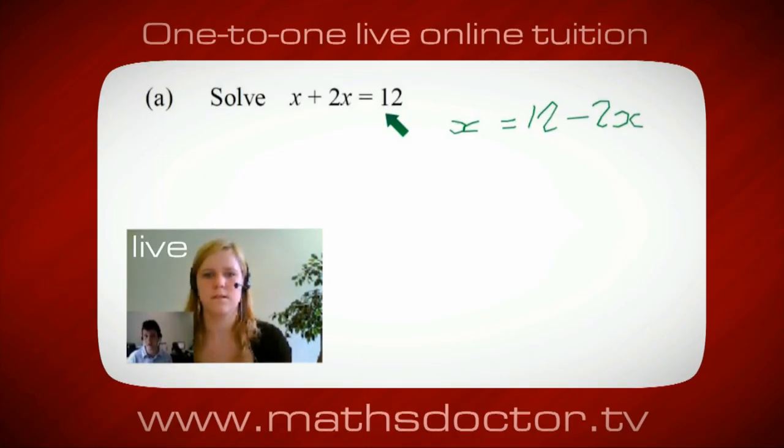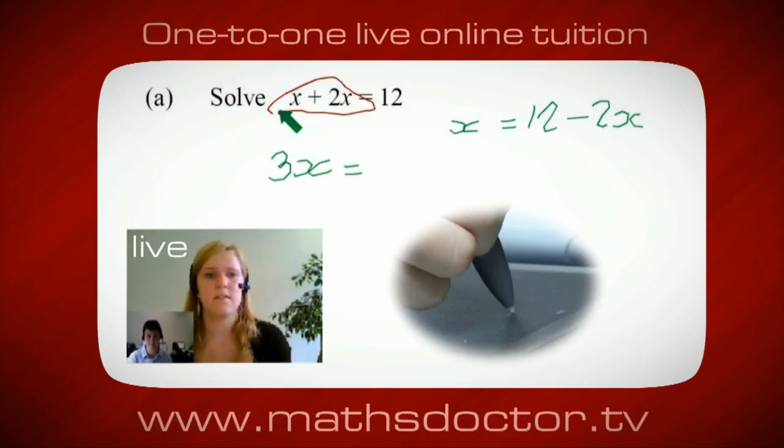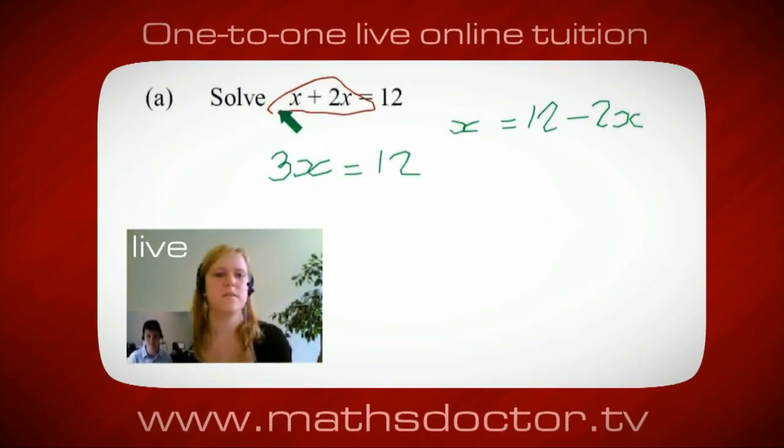Okay, so a lot of the time we want to get x by itself, but what we want to do first is get all of these x's together. So can you see anything we can do with this? Get all these together in one place. Oh, okay, it's 3x, isn't it? Yeah, absolutely. So 3x equals 12. Oh, and so x equals 4. Brilliant. Spot on. Well done.